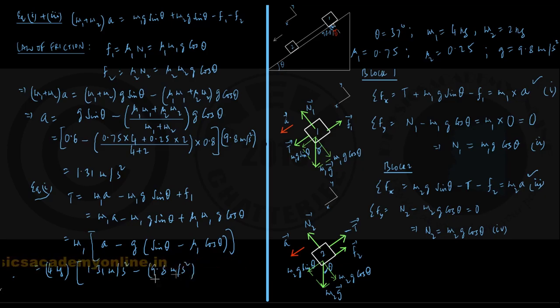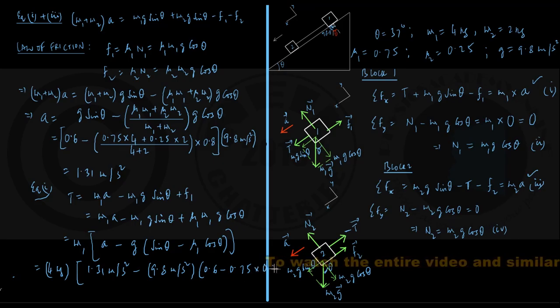into sin 37 degrees 0.6 minus mu1 was 0.75 into cos 37 degrees 0.8.